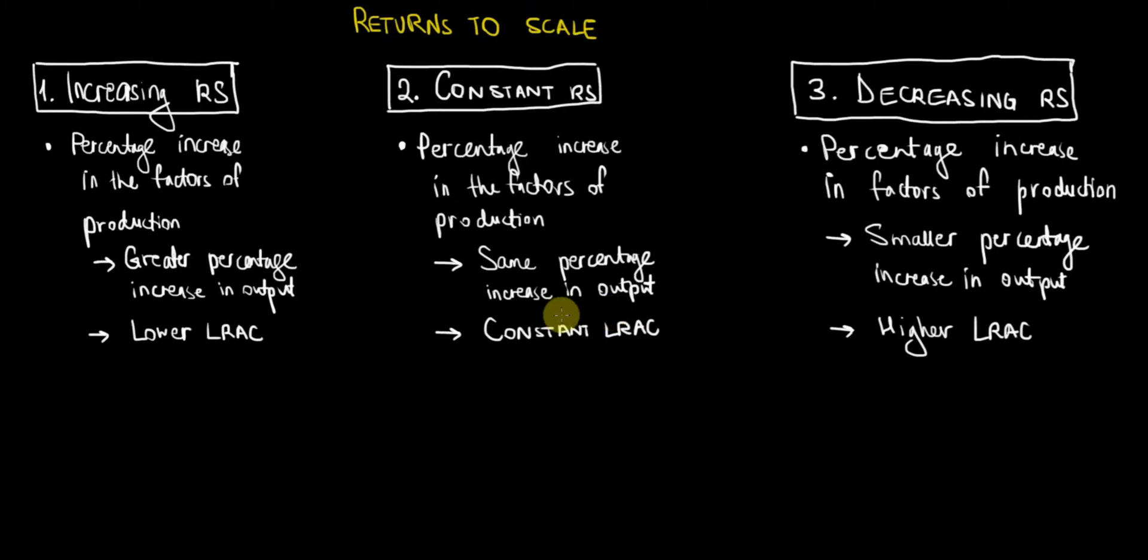And finally, when we talk about decreasing returns to scale, that means that if we consider a percentage increase in the factors of production, we will achieve a smaller percentage increase in output. In other words, our costs of production rise faster than our output.